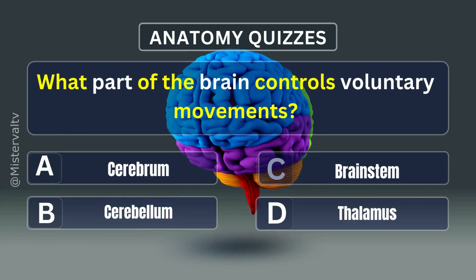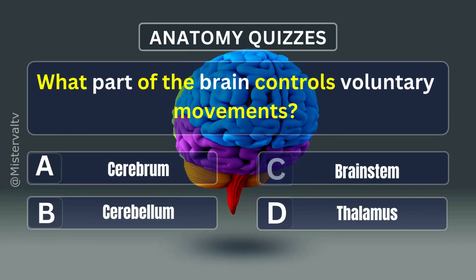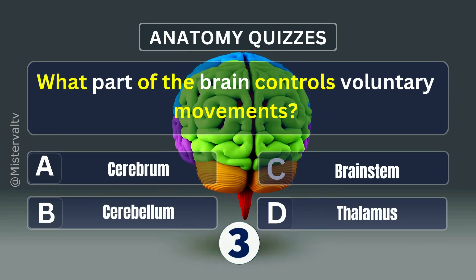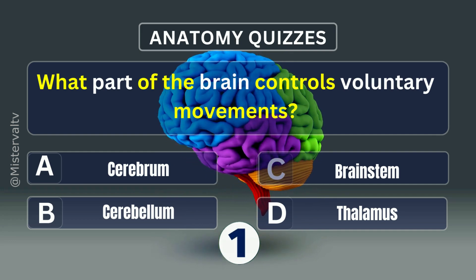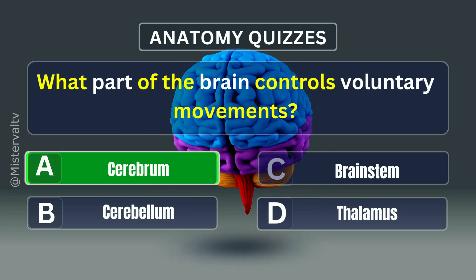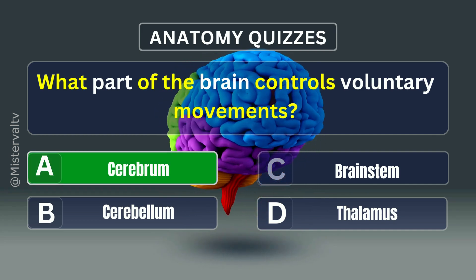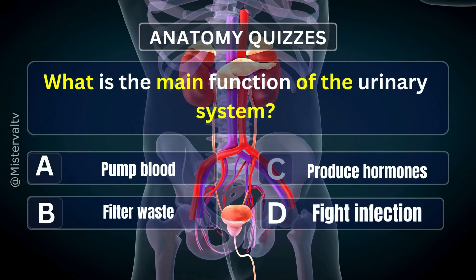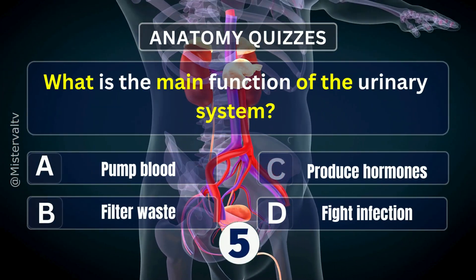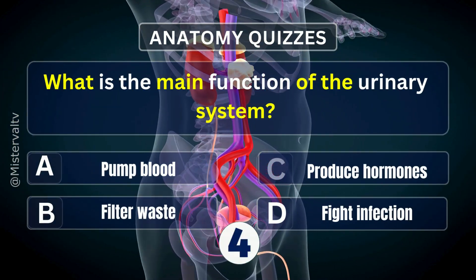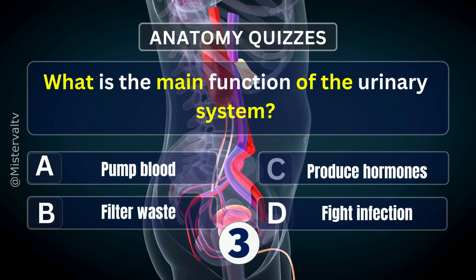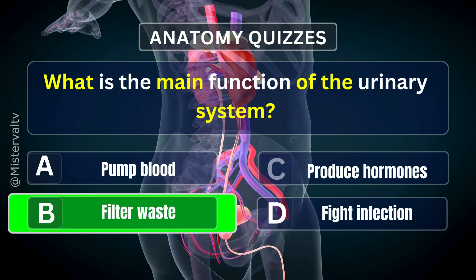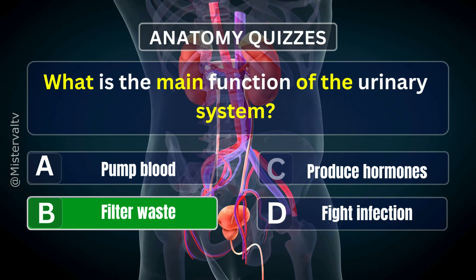What part of the brain controls voluntary movements? Answer. A. Cerebrum. What is the main function of the urinary system? Answer. B. Filter waste.